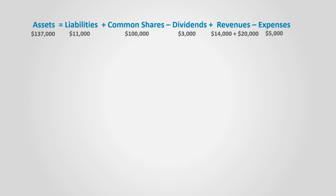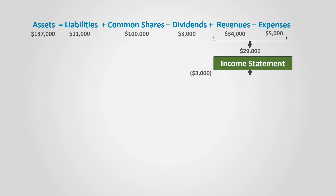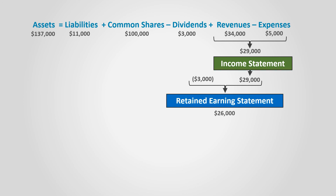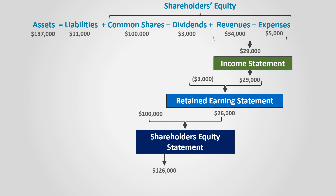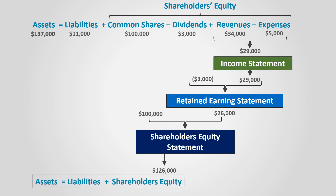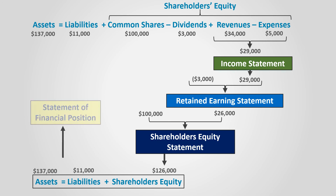To make it clearer, let's put numbers to these relationships. Revenue is composed of $14,000 and $20,000 for a total of $34,000. Expenses are $5,000, so net income is $29,000 — this forms the income statement. Subtracting $3,000 of dividends from net income of $29,000 gives retained earnings, resulting in shareholders' equity of $126,000, which forms the statement of shareholders' equity. Assets are $137,000, equal to the sum of liabilities of $11,000 and shareholders' equity of $126,000, which forms the statement of financial position.